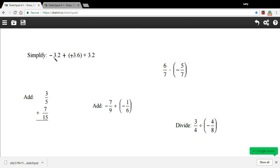So this is negative 3.2 plus 3.6. That comes out to 0.4. Check that on a calculator if you're not sure. 0.4 plus 3.2 equals 3.6.